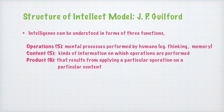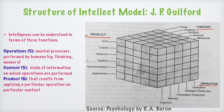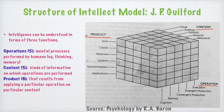In Guilford's model, there are five kinds of contents: visual, auditory, symbolic, semantic, and behavioral. There are five kinds of operations: evaluation, divergent production, convergent production, memory, and cognition. When operations are applied to contents, six kinds of products result: units, classes, relations, systems, transformations, and implications.